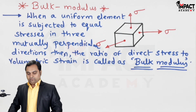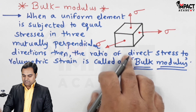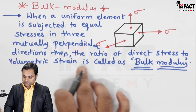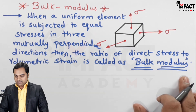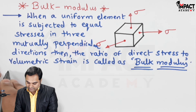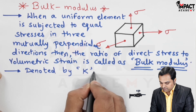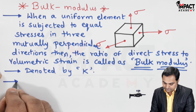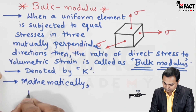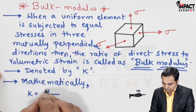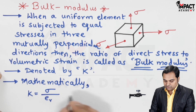So when a uniform element is subjected to equal stresses in three mutually perpendicular directions, as shown over here, then the ratio of direct stress to the volumetric strain is called as bulk modulus, denoted by capital K. The formula has direct stress in the numerator and volumetric strain in the denominator — this ratio is called as bulk modulus.